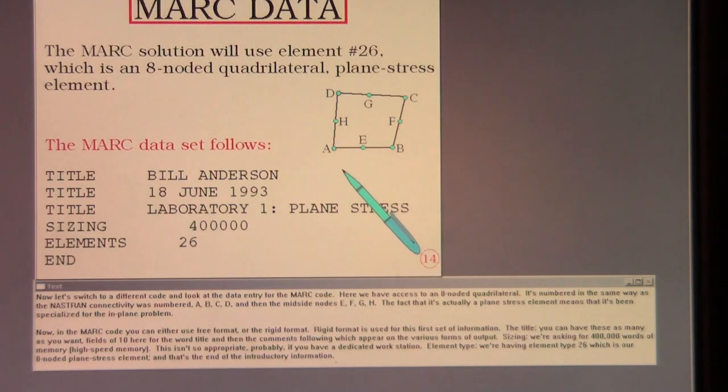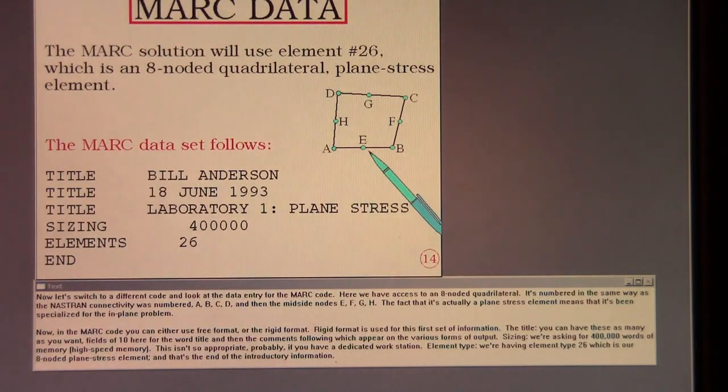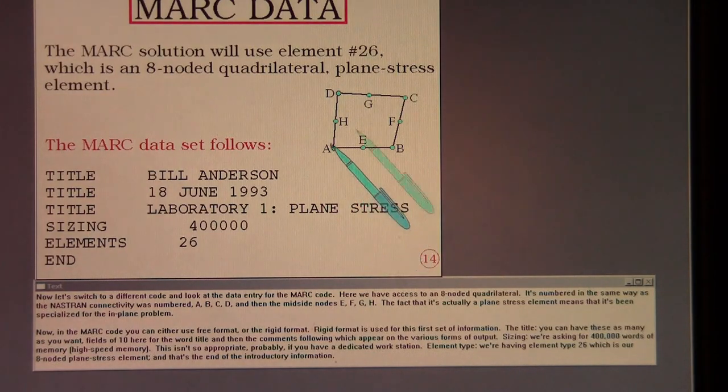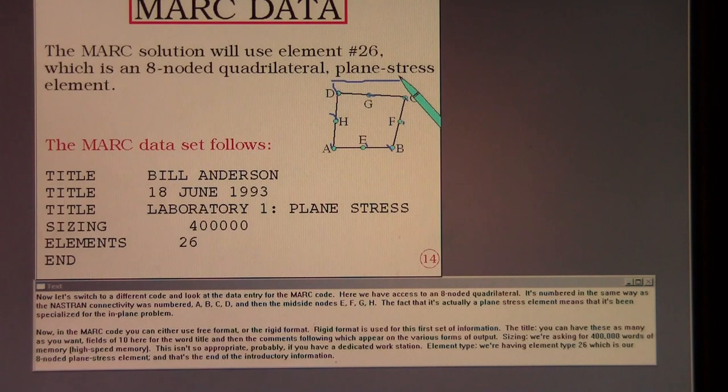Now let's switch to a different code and look at the data entry for the MARC code. Here we have access to an eight-noded quadrilateral. It's numbered in the same way as the Nastran connectivity was numbered, A, B, C, D, and then the mid-side nodes E, F, G, H. The fact that it's actually a plane stress element means that it's been specialized for the in-plane problem.